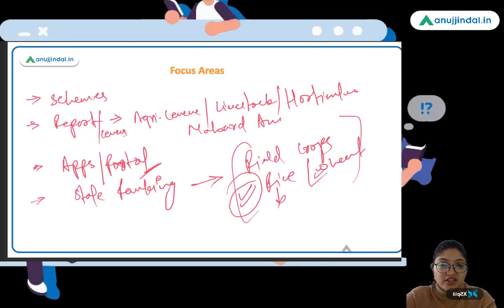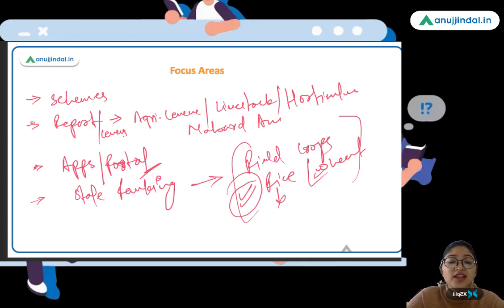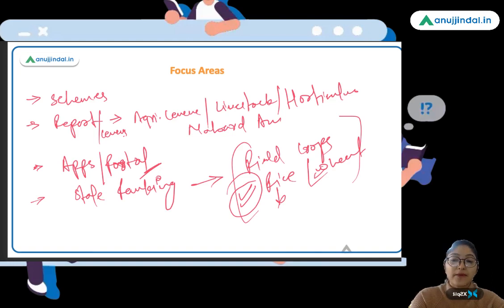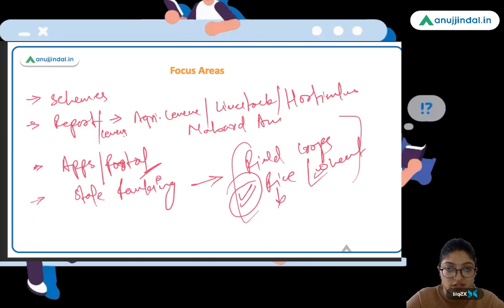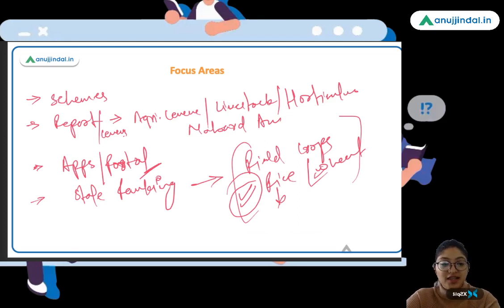That covers the current affairs strategy. I feel this is a very overhyped section that frustrates many students, partly because so many online resources create confusion. I've substantiated my argument with previous year paper analysis, giving you a bird's eye view of how you should prepare and plan your strategy for this section. I hope you liked it — post any queries below and I'll try to resolve them. See you in the next session. Keep working hard and keep studying.